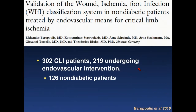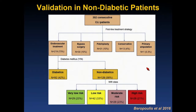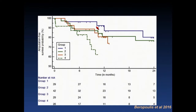The WIfI score has also been validated in non-diabetic patients undergoing endovascular intervention. This study of 126 non-diabetic patients showed relatively similar percentages in each group, suggesting the four categories represent the spectrum of CLI. Interestingly, in this non-diabetic cohort, amputation risk was relatively similar among categories 1, 2, and 3, with really group 4 driving very high risk of major amputation — patients with very large wounds or concomitant infection.